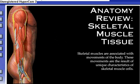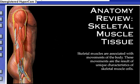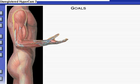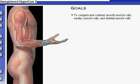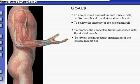Skeletal muscles are associated with movements of the body. These movements are the result of unique characteristics of skeletal muscle cells. Your goals for learning are to compare and contrast smooth muscle cells, cardiac muscle cells, and skeletal muscle cells; to review the anatomy of the skeletal muscle; to examine the connective tissues associated with skeletal muscle; and to review the intracellular organization of the skeletal muscle cell.